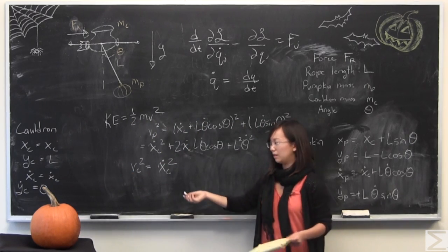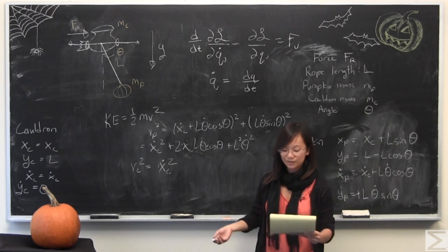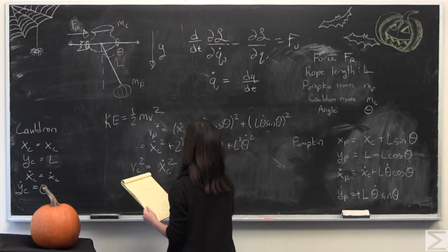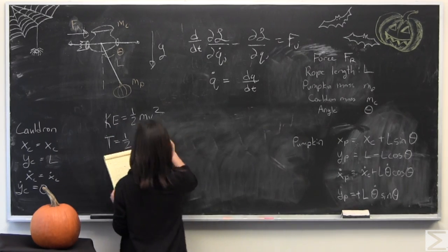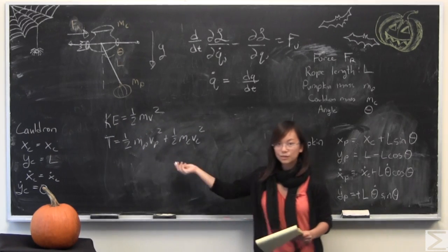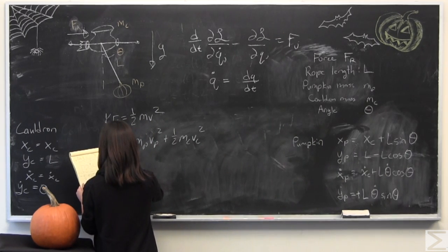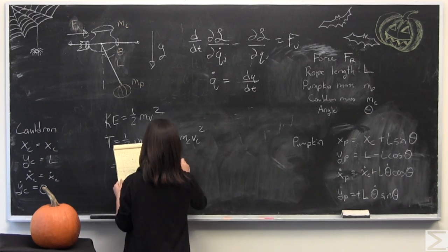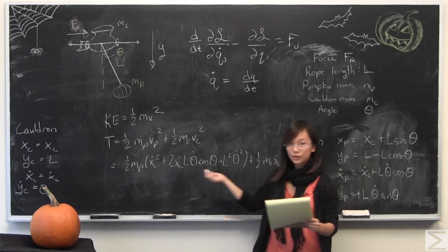For the cauldron, it's a lot simpler. The velocity of the cauldron only equals x dot c squared, and that's all you really need. T is equal to half mv squared. We have both of the masses, both the velocities. I'm just going to write it out.